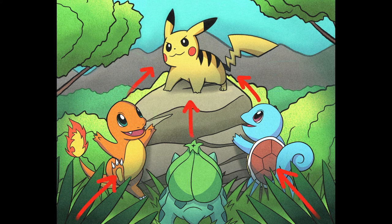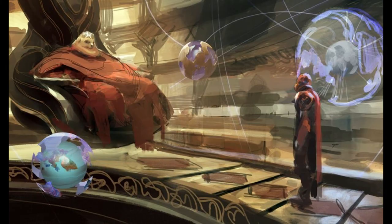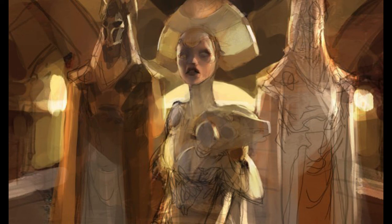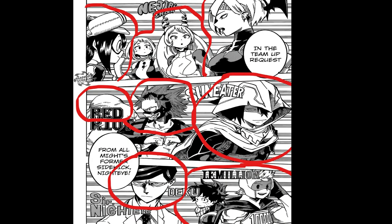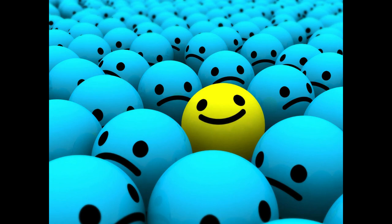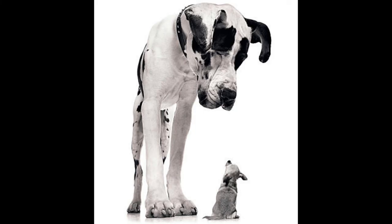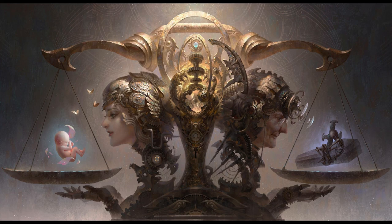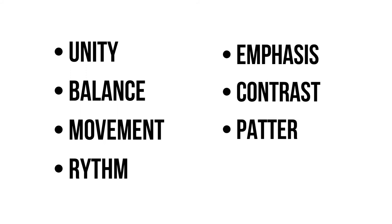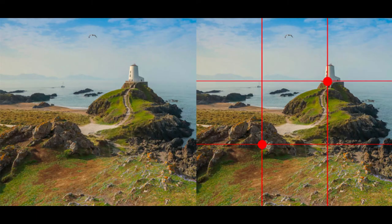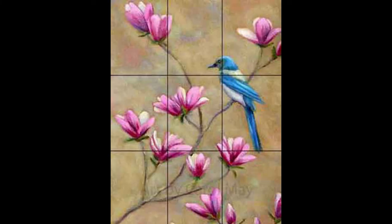By doing that, we can see a direction or flow in the drawing which guides us to our focal point — this is an example of a background with good composition. You can also have more than one focal point. Other elements to consider for good composition include unity, balance, movement, rhythm, emphasis, contrast, pattern, and proportion. The rule of thirds is also an important tool for making backgrounds and compositions.